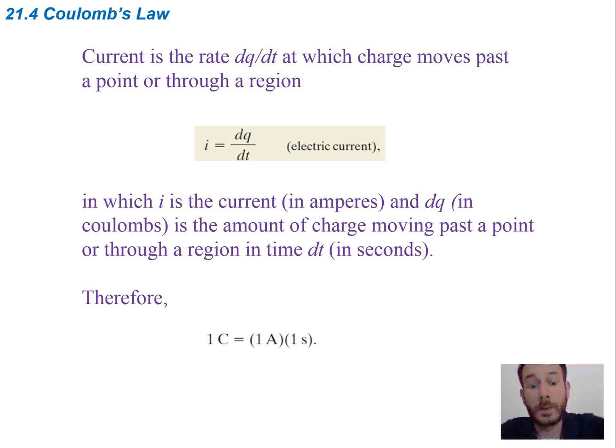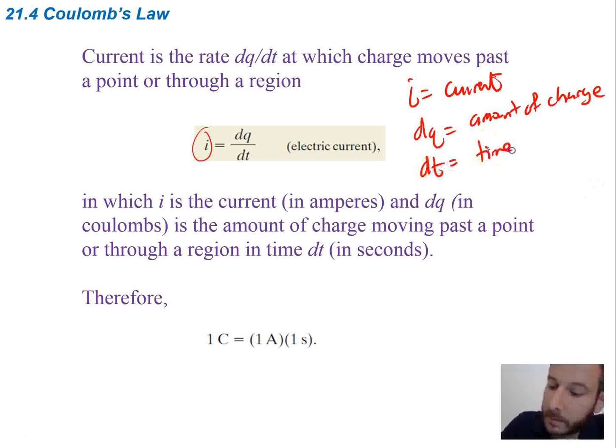So another concept we need to talk about is current. So current is going to be the rate dq dt at which charge moves past a point or through a region. So it's going to be the rate at which charge moves. So we're going to denote that current with i. So i is going to be our current. dq is just the amount of charge moving past a point. And then dt is going to be your time increment.